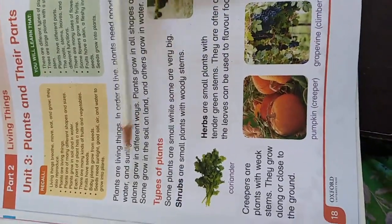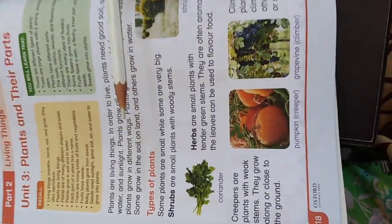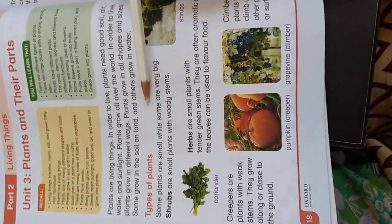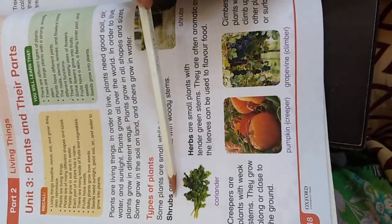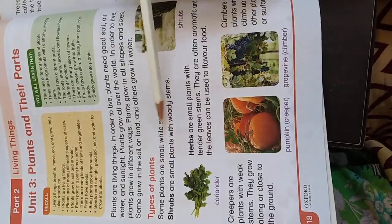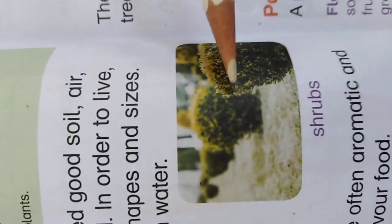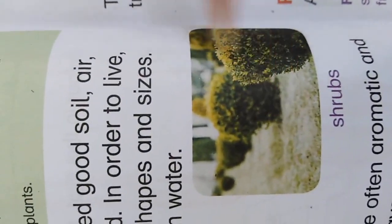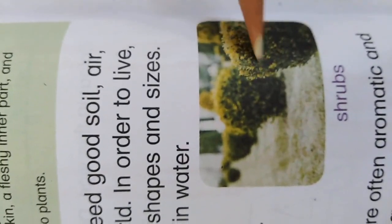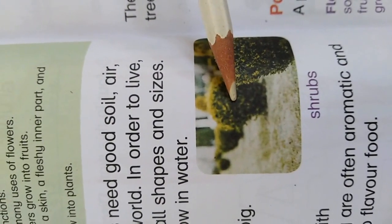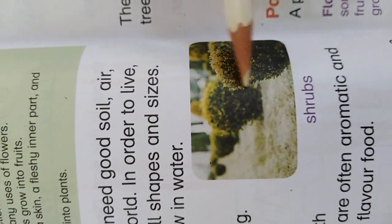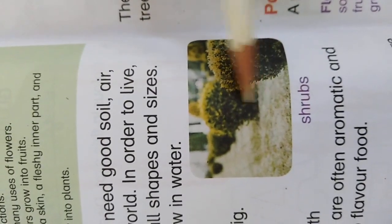Today we will read about different types of plants. Some plants are small while some are very big. Shrubs are small plants with woody stems. You will find these plants in your school also — they grow with woody stems down in the ground.